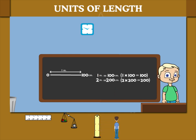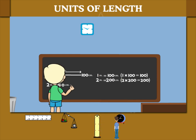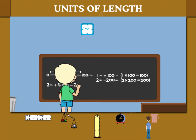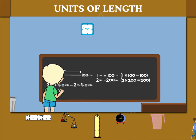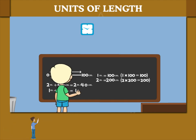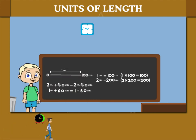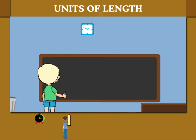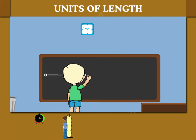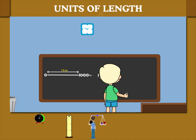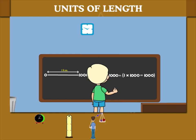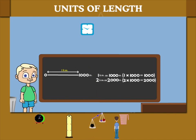If you add 40 cm to this, you get 2 meters 40 cm. In the same way, 1 meter plus 60 cm is equal to 1 meter 60 cm. 1 kilometer is equal to 1,000 meters, and 2 kilometers is equal to 2,000 meters.